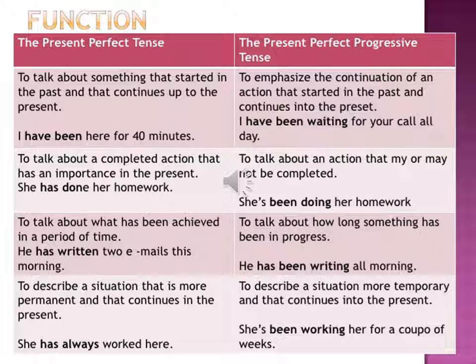Although we have already discussed the rules and usage of Present Perfect Tense and Present Perfect Progressive Tense, in this slide I have shown the difference between these two tenses. We use Present Perfect Tense to talk about something that started in the past and continues up to the present. For example: 'I have been waiting here for 40 minutes' — meaning the action of waiting for 40 minutes is complete.